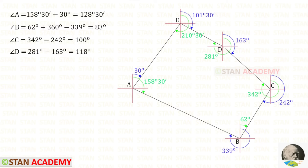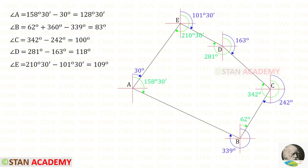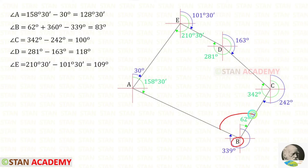Let us find interior angle D by subtracting the relevant bearings, giving 118 degrees. Finally, interior angle E is found the same way, giving 109 degrees. It is very easy to find these four interior angles; only at station B was it slightly more involved.